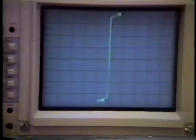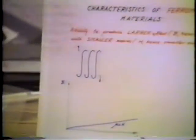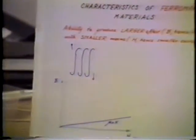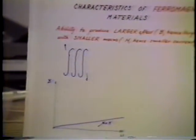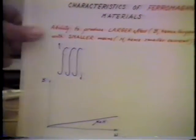And the saturation is relatively abrupt. So we have demonstrated the second basic feature of the ferromagnetic material. Now we can go and show the third basic feature of ferromagnetic material.